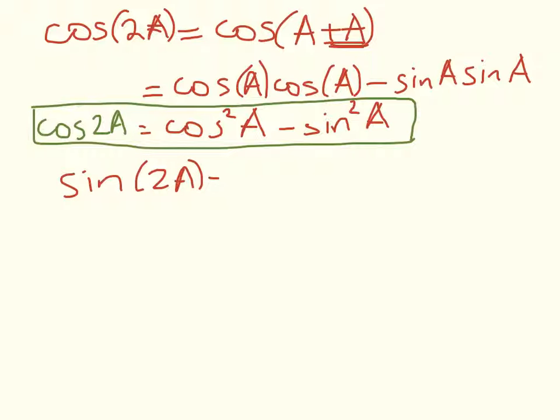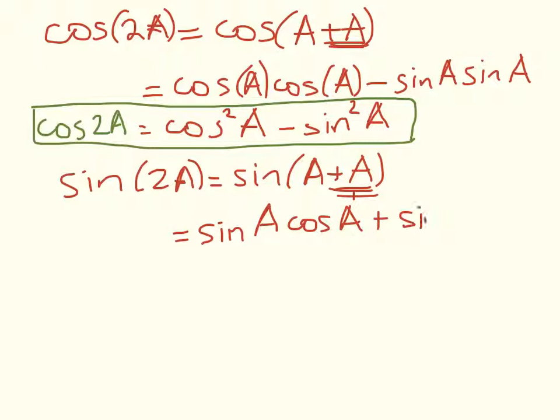But first, let's look at the sine of 2A. Well, sine of 2A is equal to the sine of A plus A. So using the formula for sine of A plus B and substituting that in, we get sine of A times the cosine of the second one, cos of A plus sin of A, cos of A.